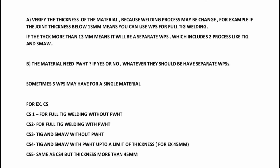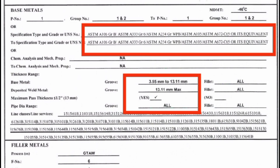Full TIG welding has a thickness range to verify. CS1 is full TIG — not TIG plus SMAW. CS3 is TIG and SMAW without PWHT. The WPS base metal thickness range is 3.55 mm to 13.11 mm for full TIG welding. CS3 is TIG welding plus SMAW. We need to find the actual thickness to select the correct WPS.